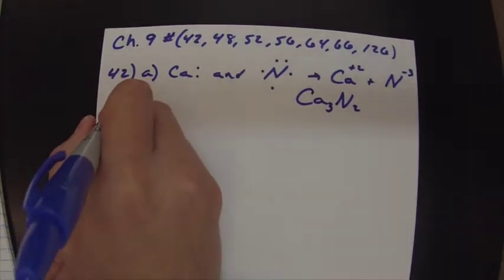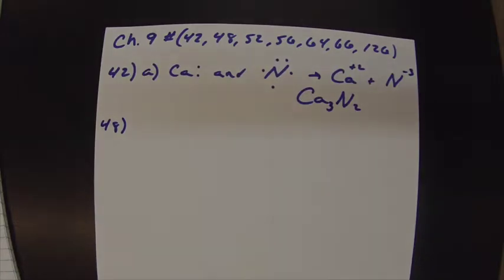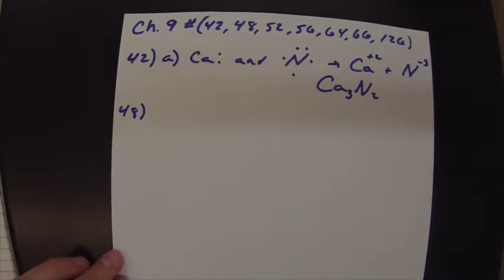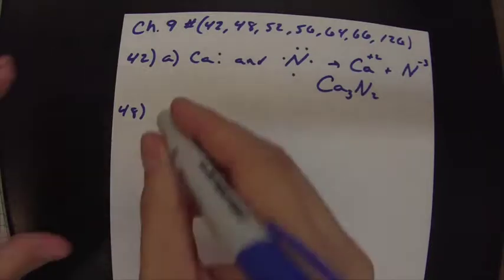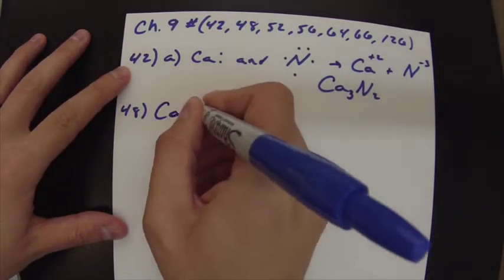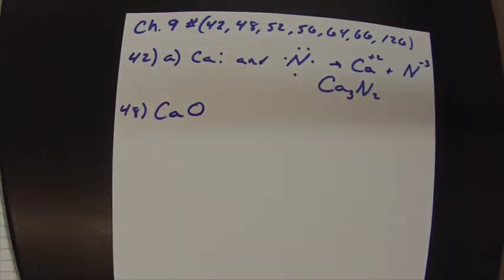Alright, next up is number 48. Number 48 is a mess. And so I'm glad I have almost this whole page to do it. So basically, what 48 is saying is, it says, use the Born-Haber cycle and a bunch of data to calculate the lattice energy for CaO. So CaO is what we're doing.